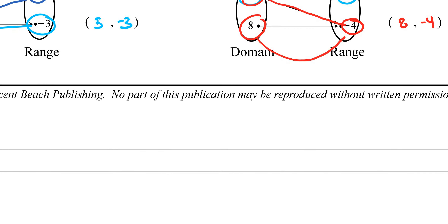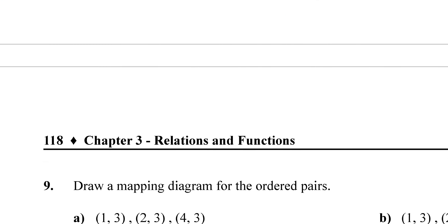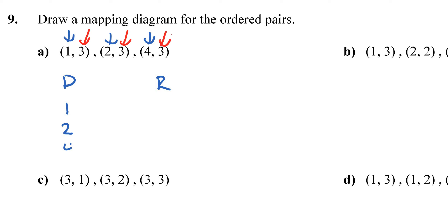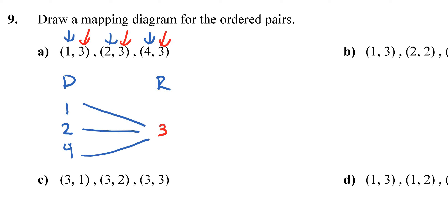For question 9, draw a mapping diagram for the ordered pairs. Letter A: domain X values are 1, 2, and 4. Range Y values are all 3, so just write one 3. Every X value maps to that 3.